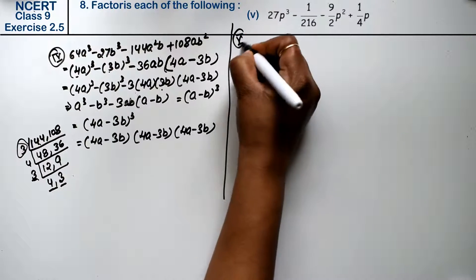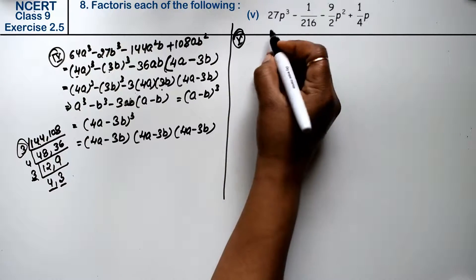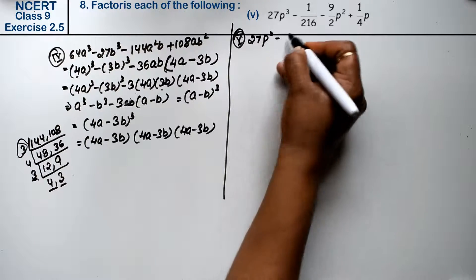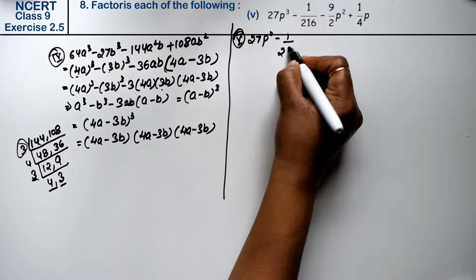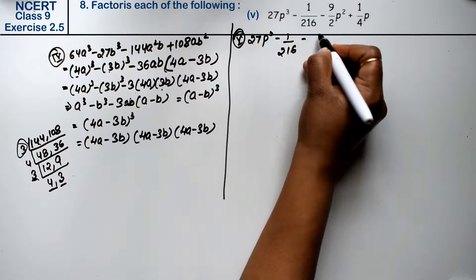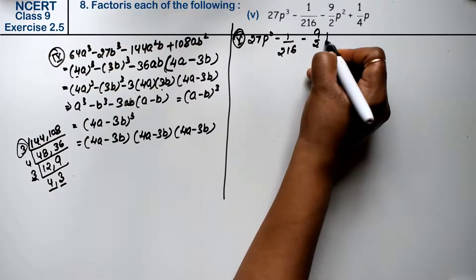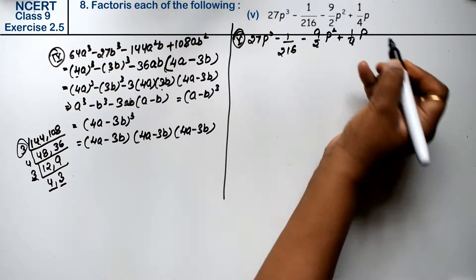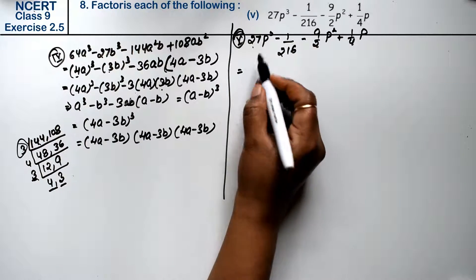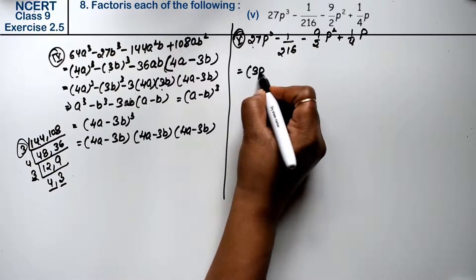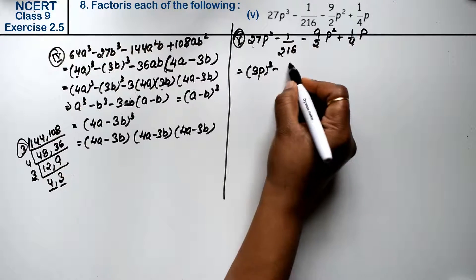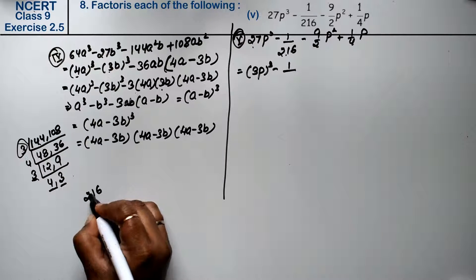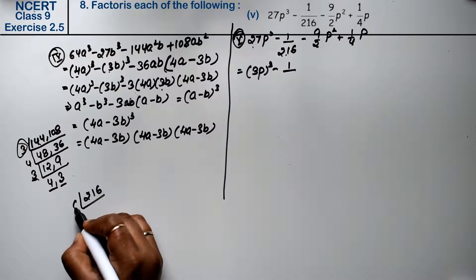Let's do the fifth part. Fifth part is: 27b cube minus 1/216 minus 9/2 b square plus 1/4 b. So this is our (3b) whole cube minus (1/6) whole cube — because 1/6 cubed is 1/216. I'm going to work this directly.